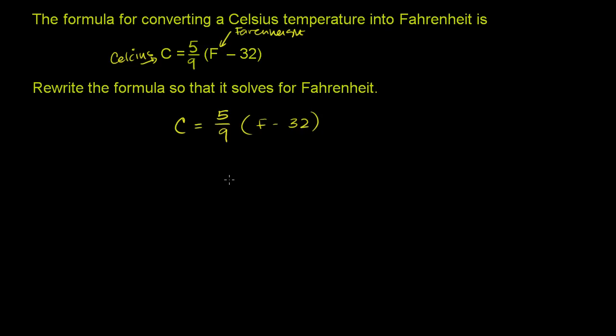So the first useful thing to do might be to get rid of this 5 ninths from both sides, or at least from the right side of the equation. So we just have an F minus 32. And the easiest way to do that is to multiply by the inverse of 5 ninths.